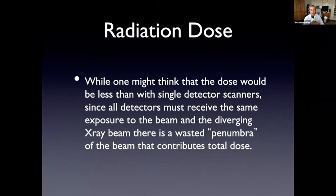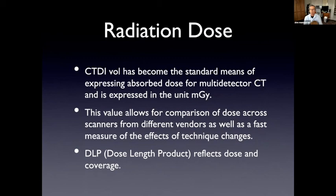Coming back to this idea of dose, because all detectors receive the same exposure and this wasted penumbra, oftentimes single slice scanners have a lower dose. Now, how do we measure dose? It's a little complicated, but I will just bring to your attention this term, it's called CTDI volume. In the US, pretty much all the scans have to display the CTDI volume or the DLP. You should be familiar with these terms. This has become a standard means of expressing absorbed dose. Now, this is not a measured value. There's not a detector in the scanner that registers the actual dose. It's a calculated value, but it's a pretty good unit.